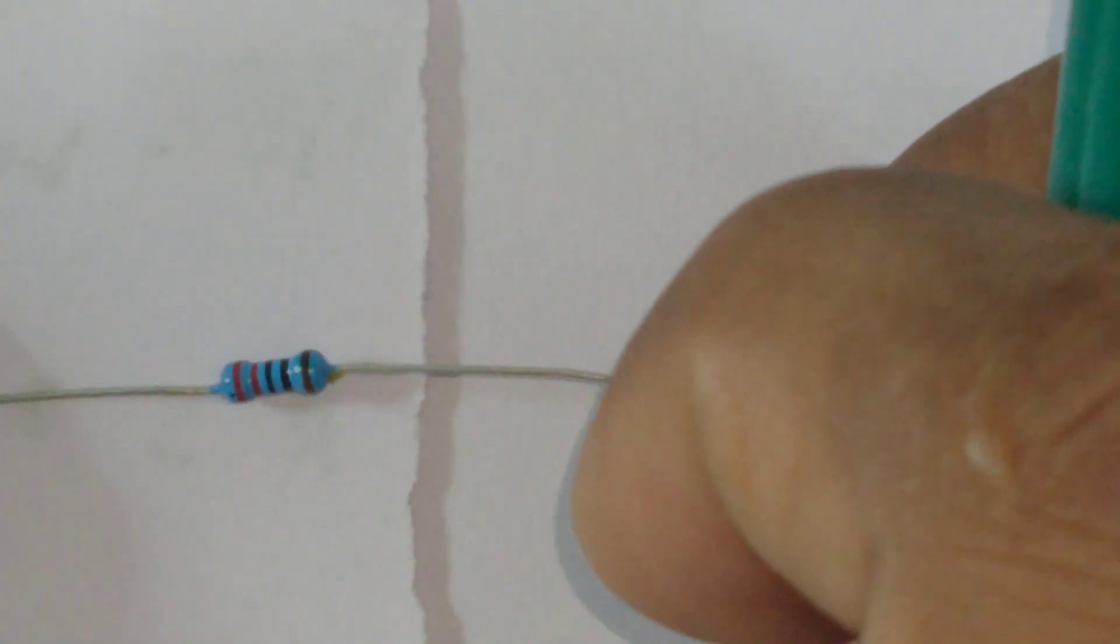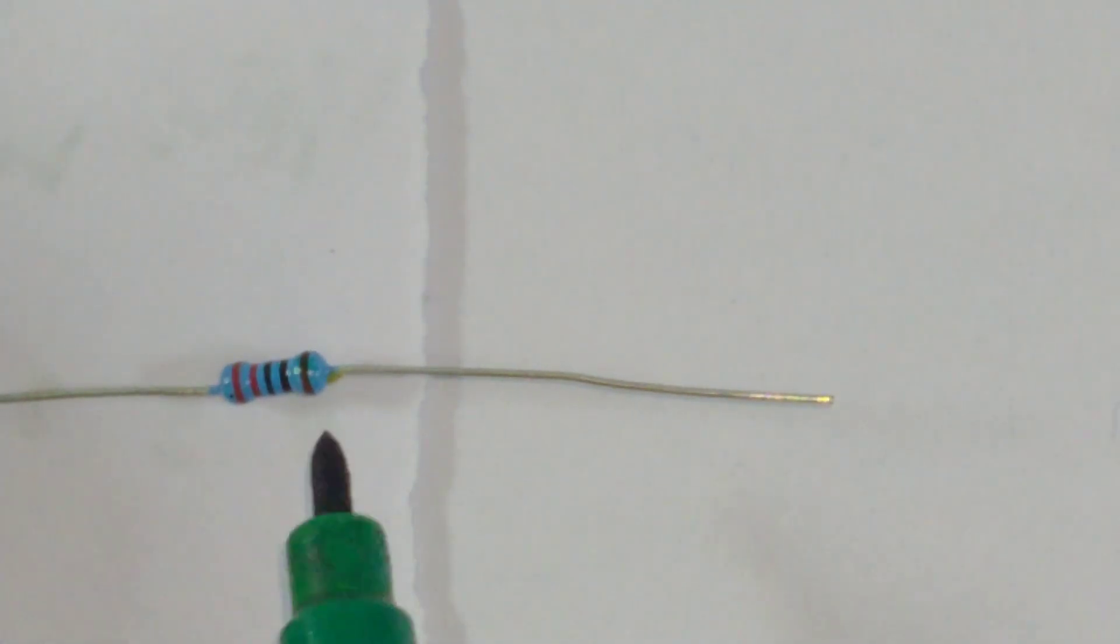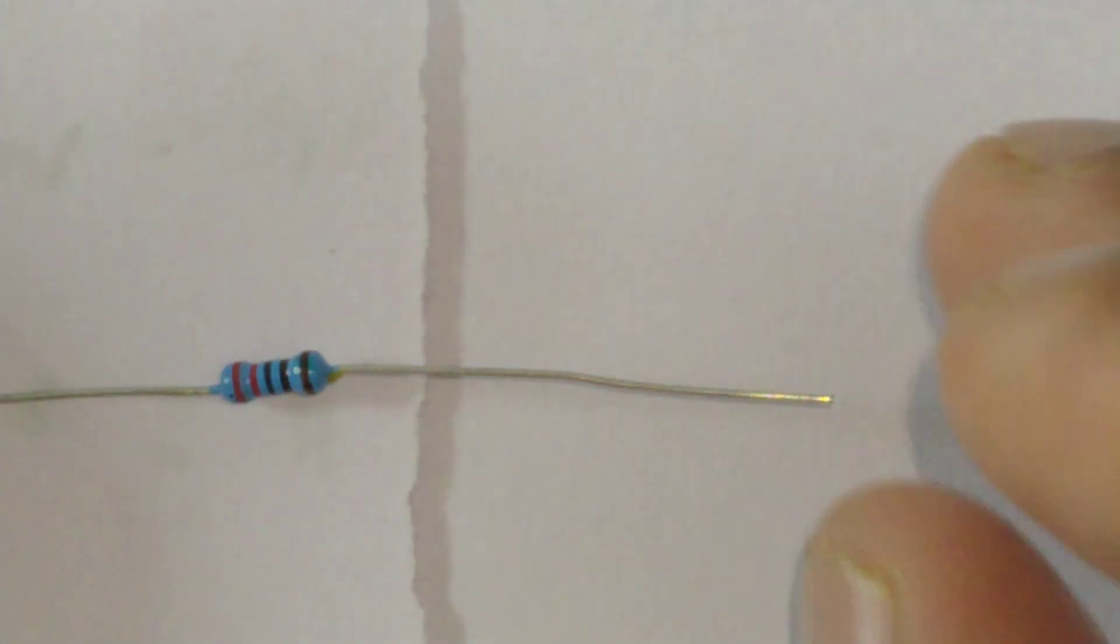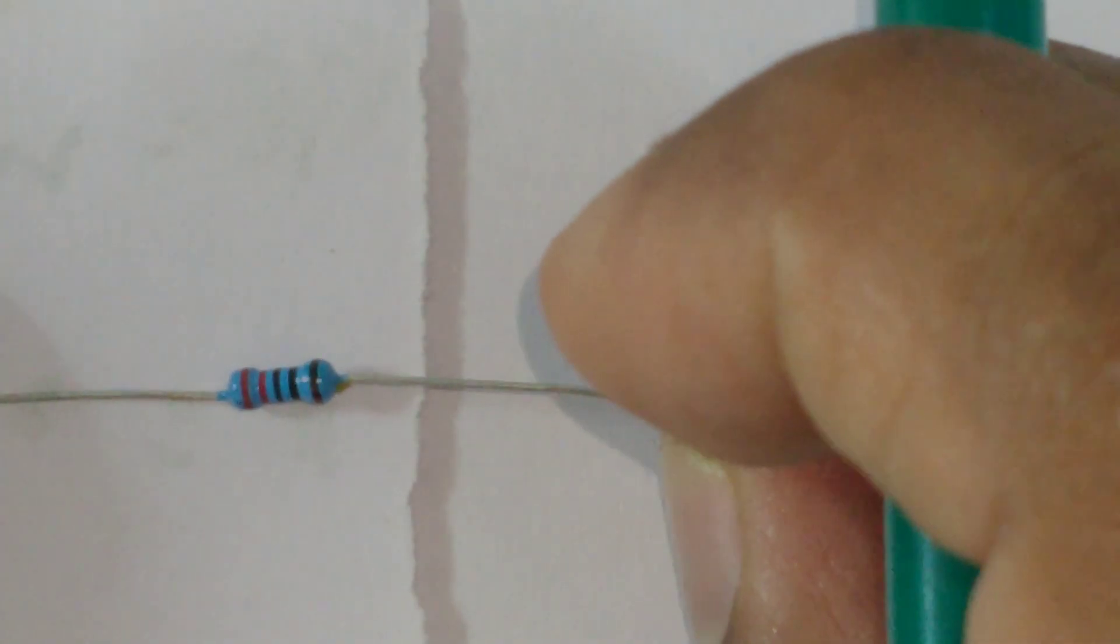While reading the value of any resistor always remember to keep the band which is separated from remaining bands towards the right side.